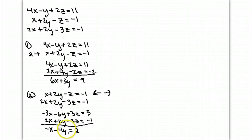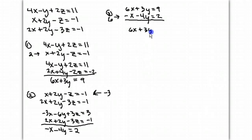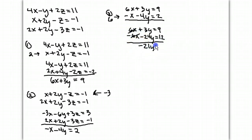So these are my two equations. In step 3, I'm going to put those two equations together: 6x plus 3y equal 9, and negative x minus 4y equal 2. I want to get rid of x, so I multiply the whole second equation by 6 to make it negative 6x. So I have 6x plus 3y equal 9, and the bottom becomes negative 6x minus 24y equal 12. When I add them together, the x's cancel, and I get negative 21y equal 21. Dividing both sides by negative 21, y is equal to negative 1.